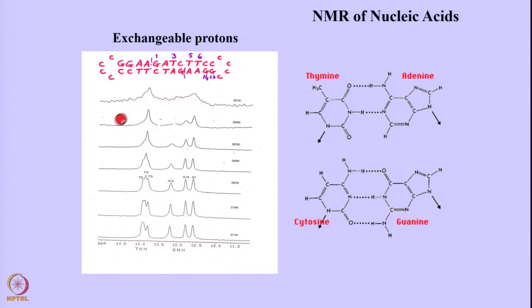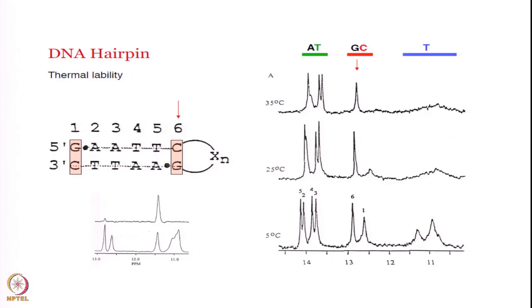If you go still higher in temperature, no signal will be present. Therefore, to find out whether your structure has a duplex or base pairing, you have to do the experiments at low temperature and monitor the imino protons. Here we show the thermal stability and how you can determine the thermal stability of a DNA hairpin.